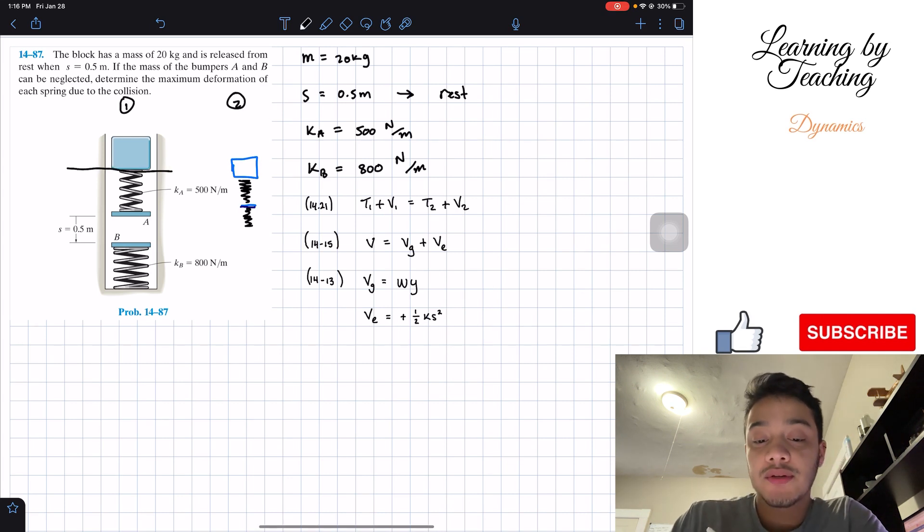At position 1, if we make the datum line here, that means that our kinetic and our potential energies are equal to zero. The kinetic is equal to zero because the velocity is equal to zero since we're at rest. The potential is zero because we set up our datum to be at this position, meaning that our y is zero, therefore no gravitational potential. And the springs have not been compressed at all, they are at unstretched lengths, therefore this is also equal to zero.